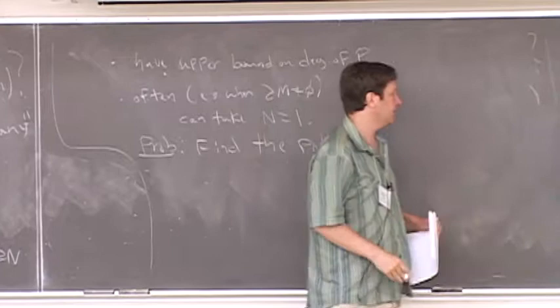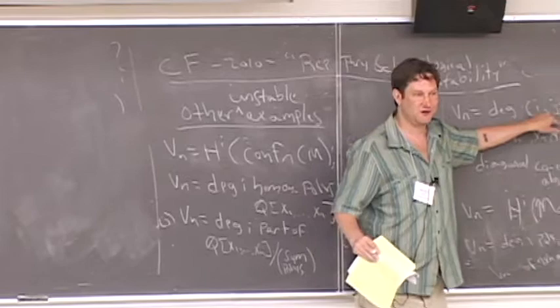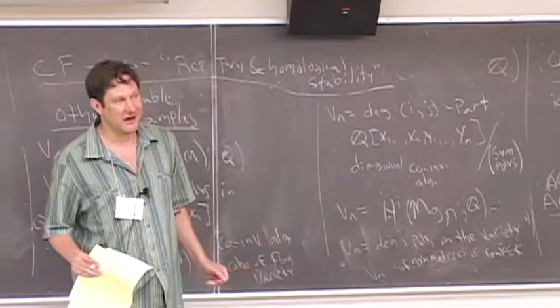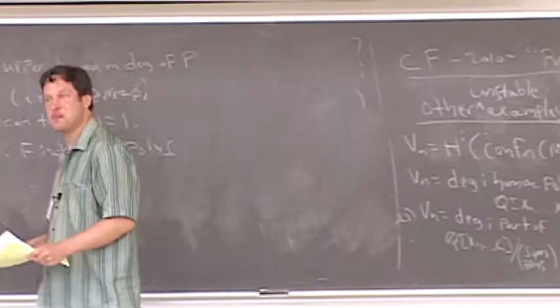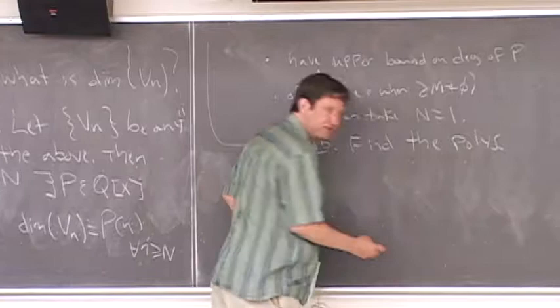One problem I want to pose is to find the polynomials explicitly. In algebraic combinatorics, people knew the bi-degrees (1,1) and (2,0), but they don't know the (2,1) part. Now we're saying for all i and j there's a polynomial — go for it. There must be meaning to this in algebraic combinatorics. We don't know algebraic combinatorics, so we're not going to find it — but the structure is there.